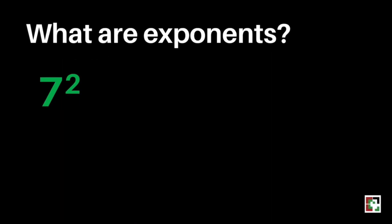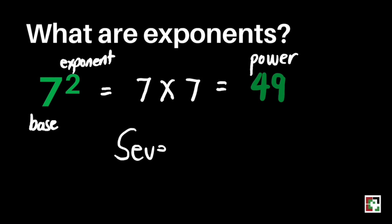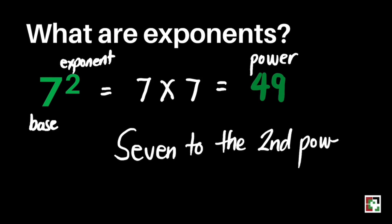We have the next one here. This is 7 to the 2nd power, where 7 is our base and 2 is our exponent. This is equivalent to 7 times 7, which is equal to 49. 49 is our power, and we read this as 7 to the 2nd power, or simply 7 squared.